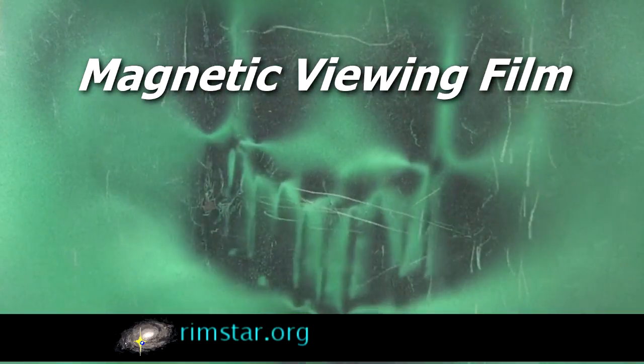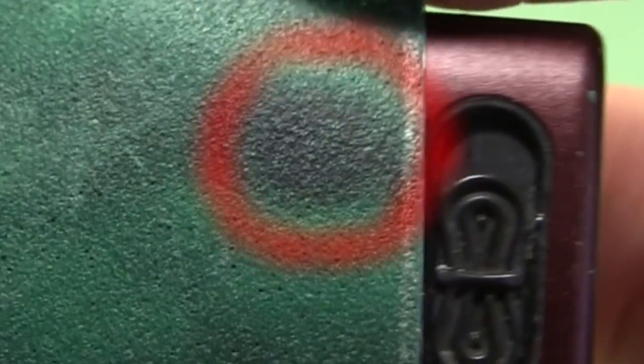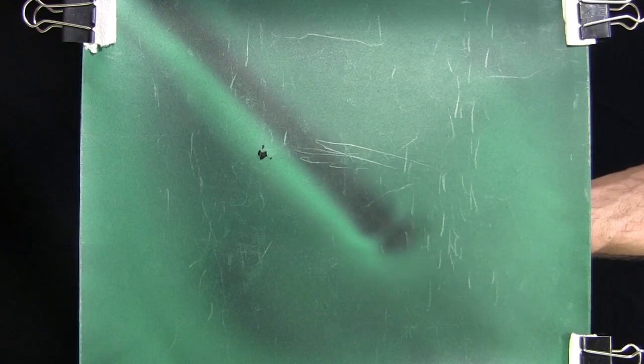Hi gang! This is Magnetic Viewing Film. It allows you to see where magnetic fields are, provided they're strong enough. I'll show you how it works, along with some neat demonstrations.